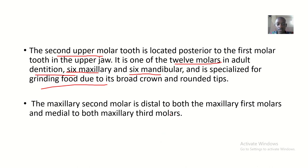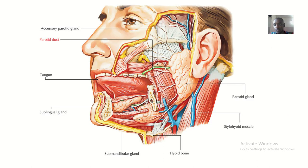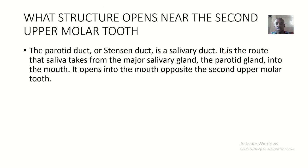The second molar tooth is distal to the first molars, and the first molars are medial to the third molars. Now, having spoken about the second upper molar tooth, what is the structure that opens near it?